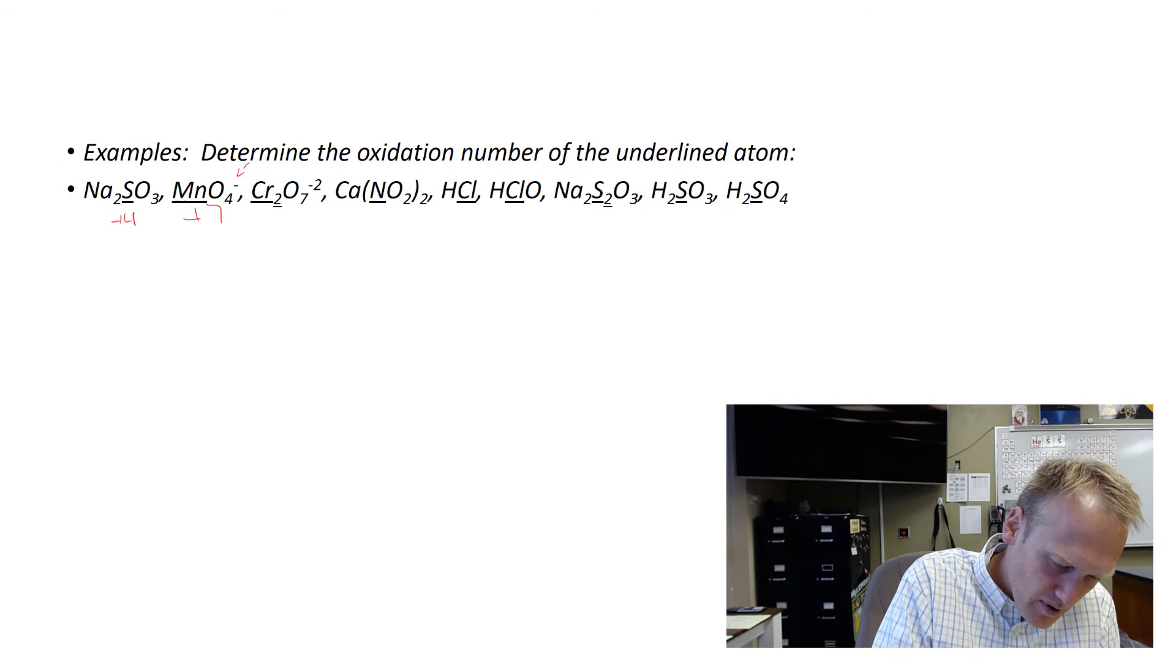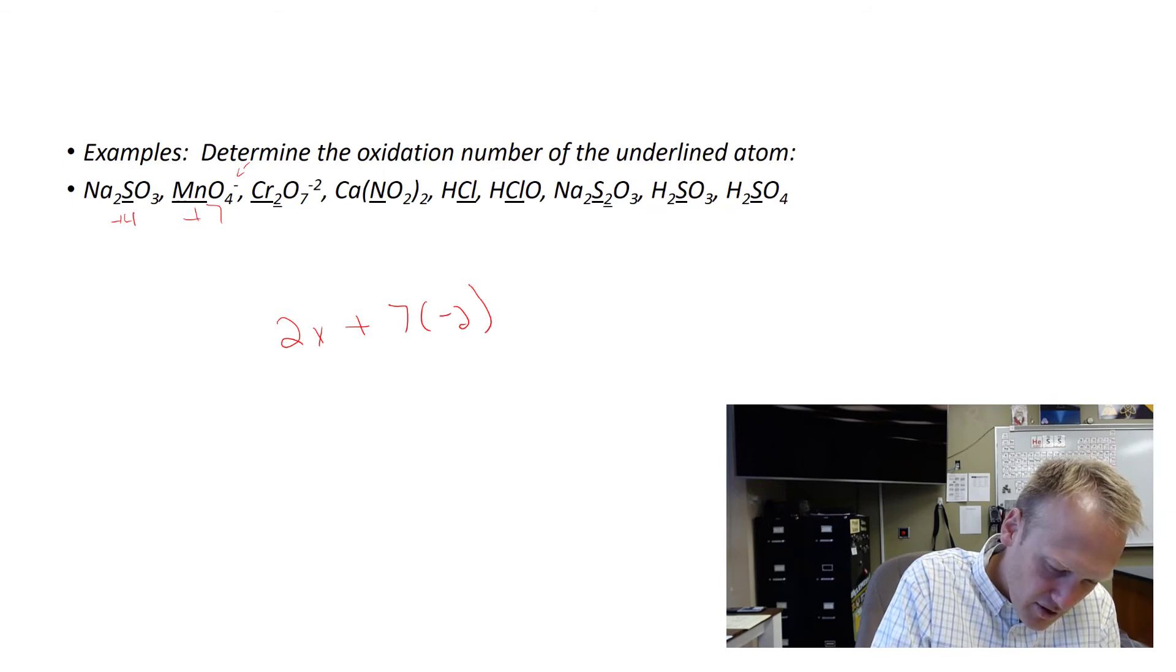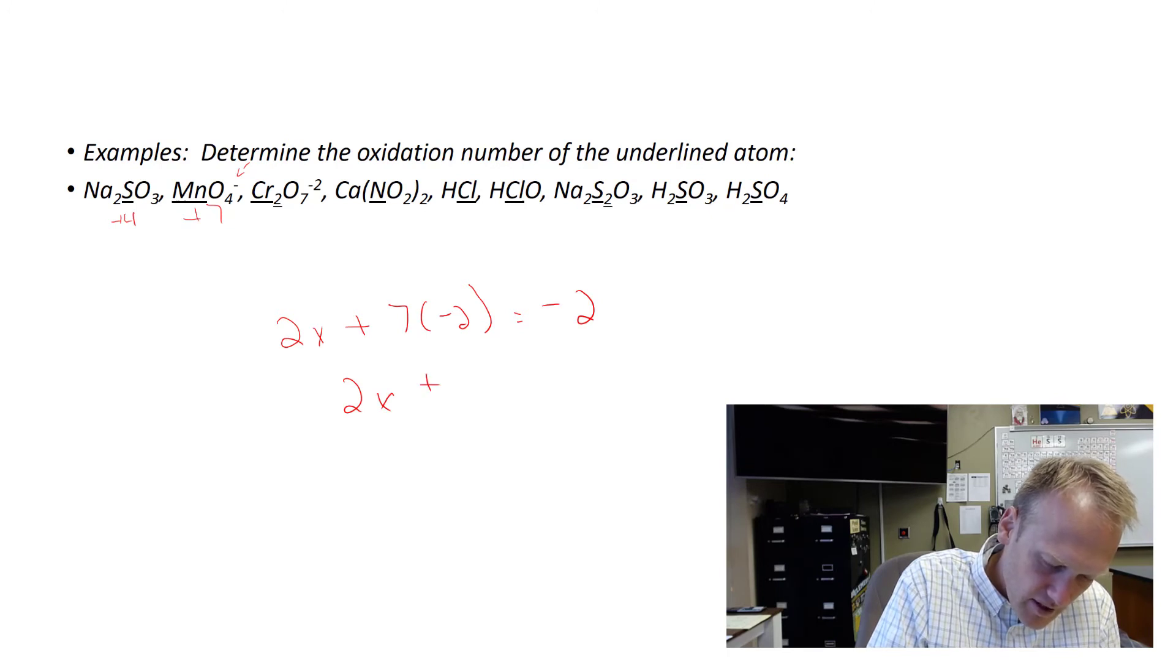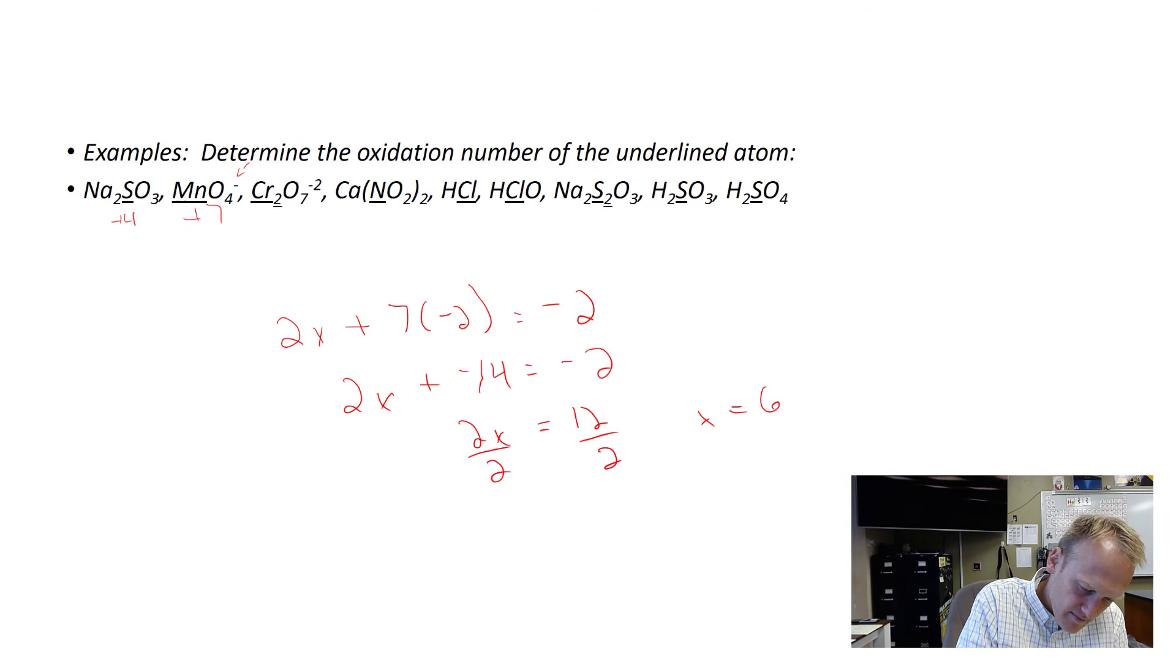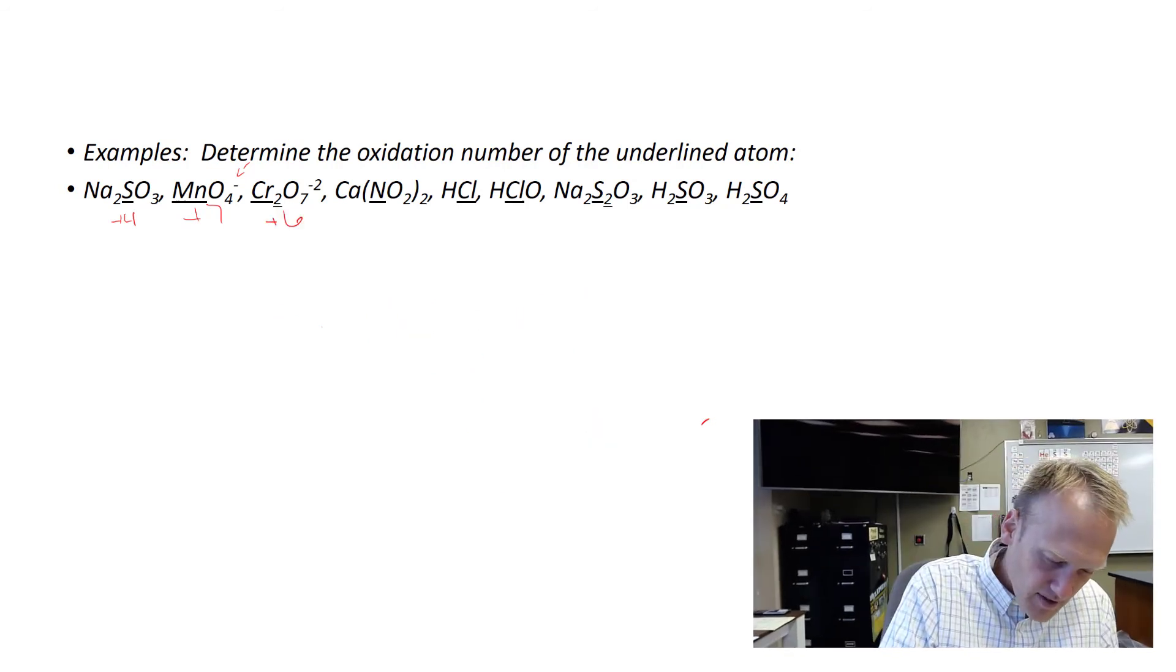So next one is dichromate, and it wants to know about chromium. And there are two chromiums. So we're going to do 2 times x plus 7 oxygen. Each oxygen is a negative 2. And this one has an overall charge of negative 2. So 2x plus negative 14 equals negative 2. So we'd add 14 to both sides and we get 12. We divide by 2, and we'd see that x equals 6. So each of these chromiums is a plus 6 charge.